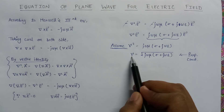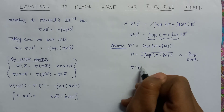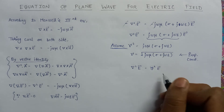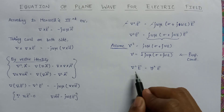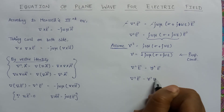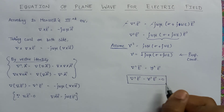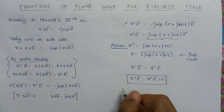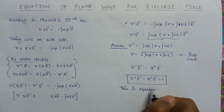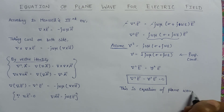Now if we write gamma in place of this expression, we get del-squared E equals gamma-squared into E. Taking this term to the left-hand side, it becomes del-squared E minus gamma-squared E equals 0. This is the equation of the plane wave for the electric field.